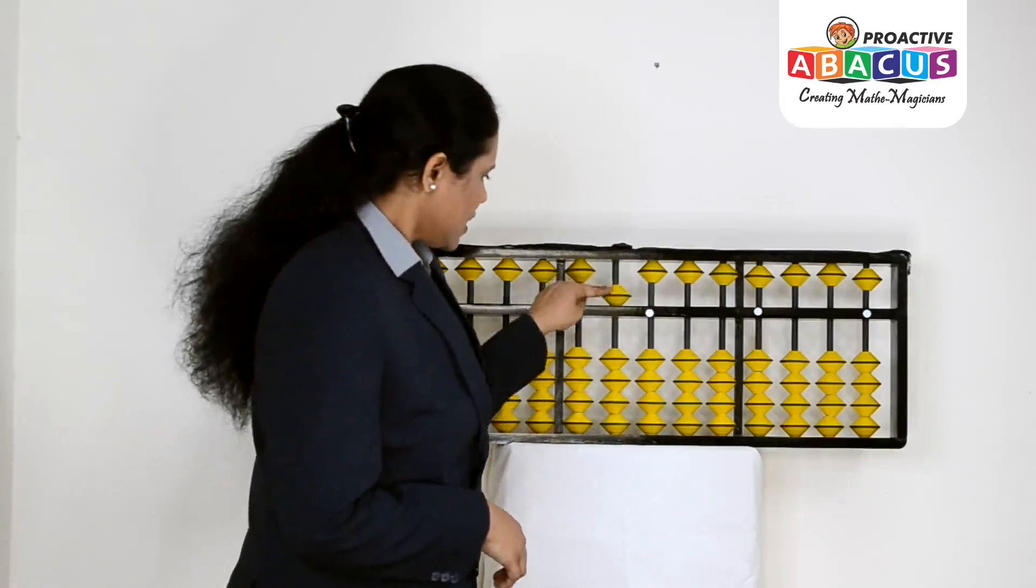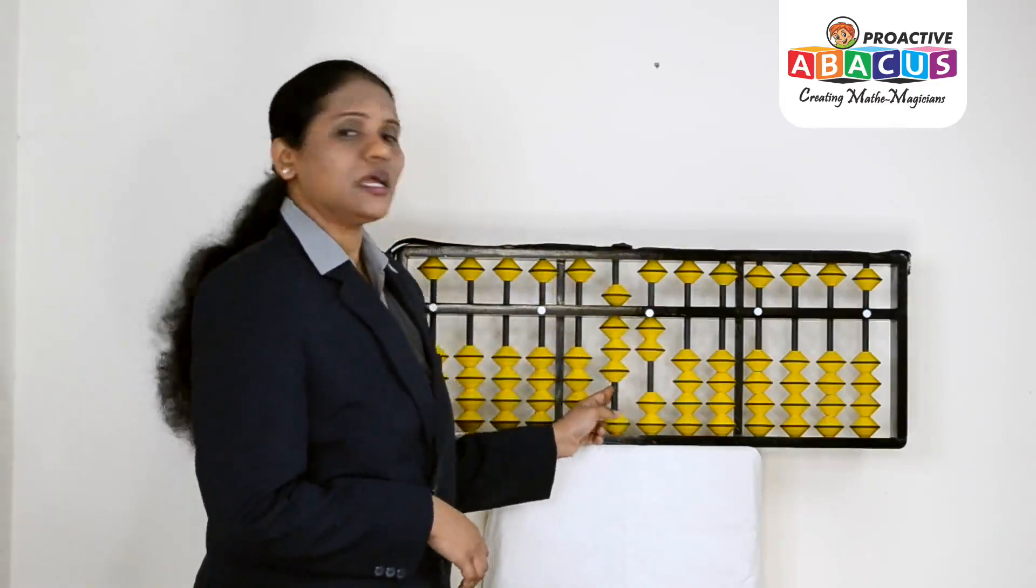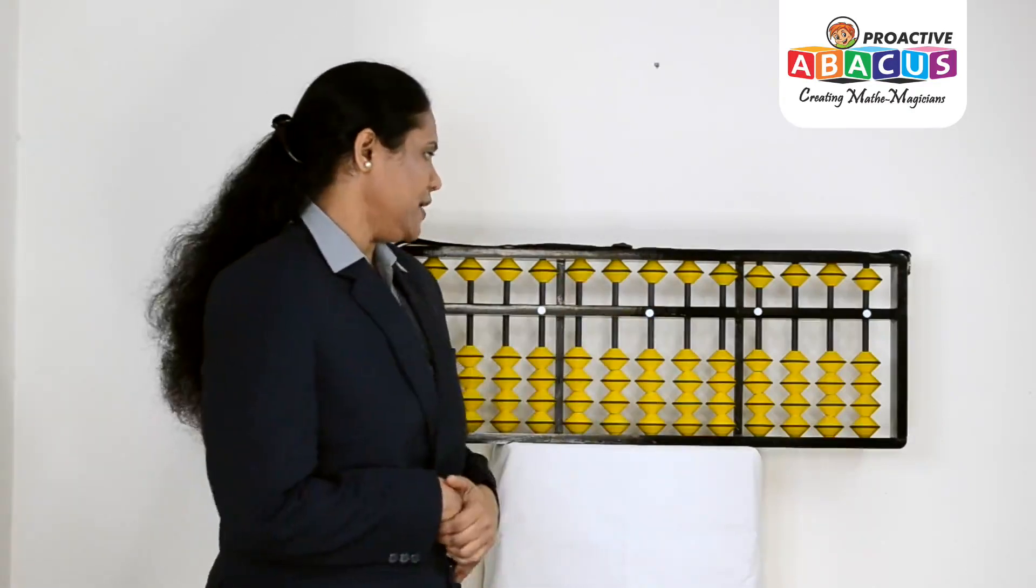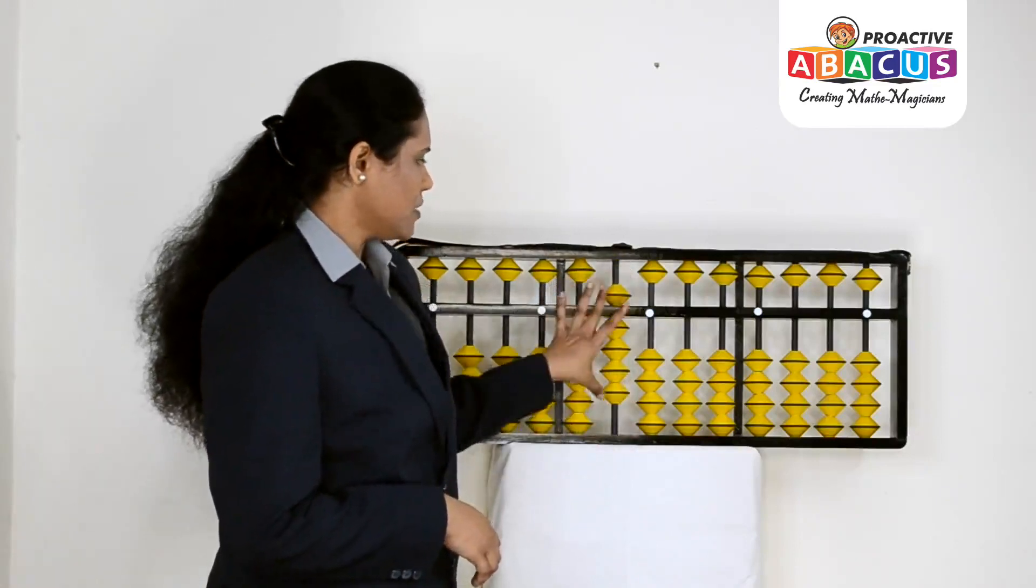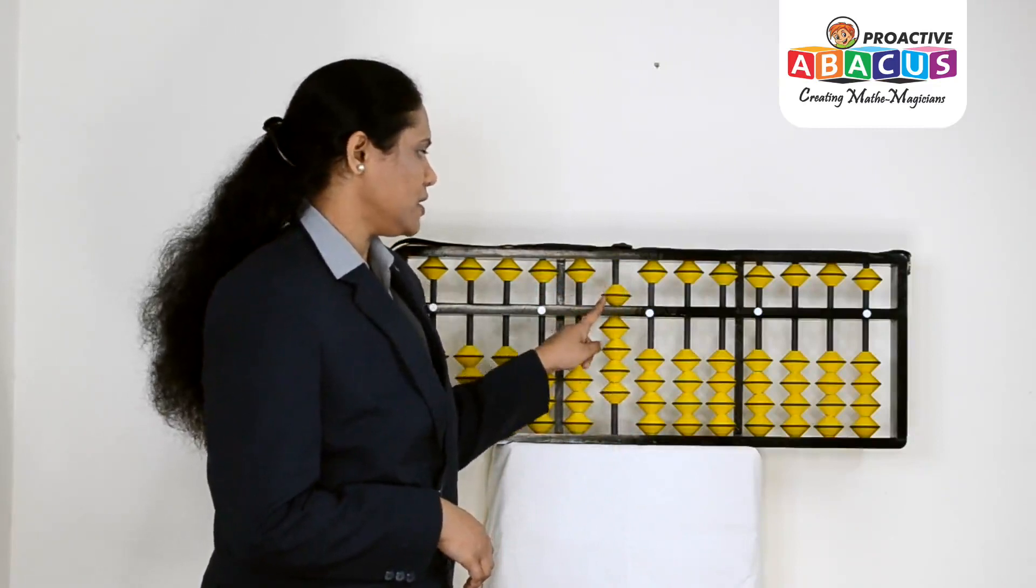Next, we show 82, that's 80 and 2. Next, we show 90. Upper deck, lower deck 4: 5, 6, 7, 8, 9. Touch the value bar, unit place is 0, that's 90.